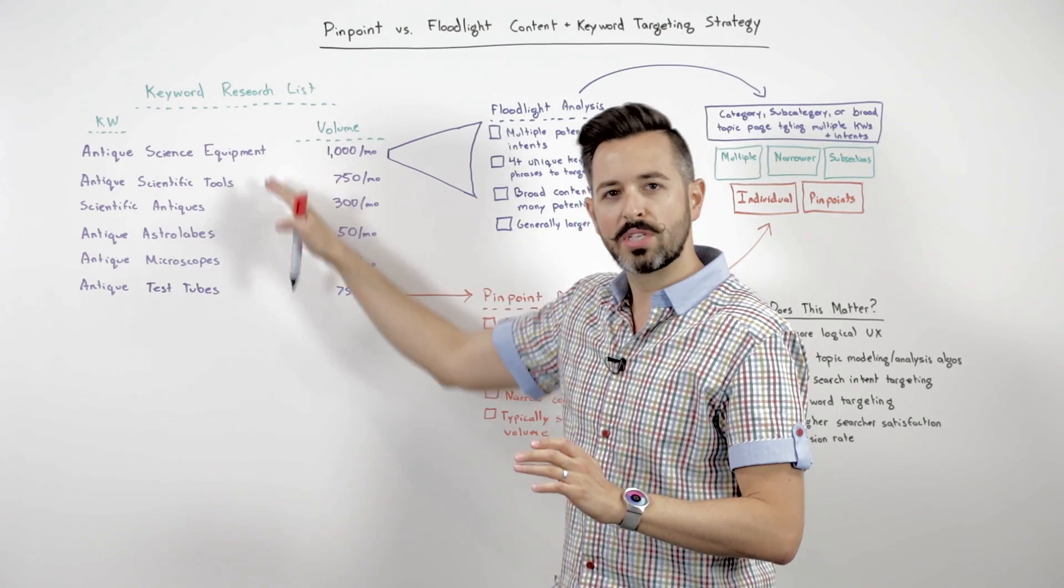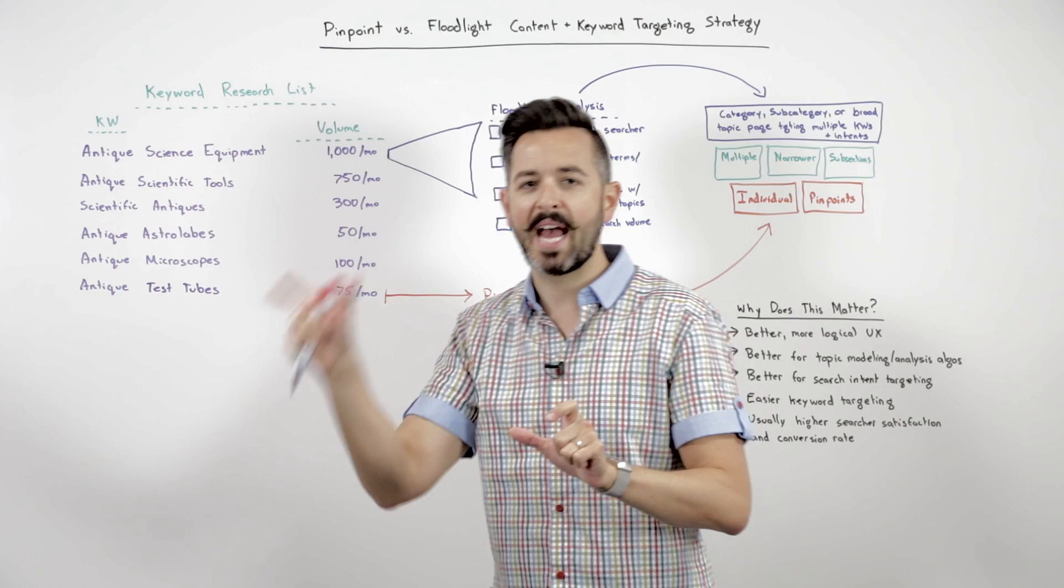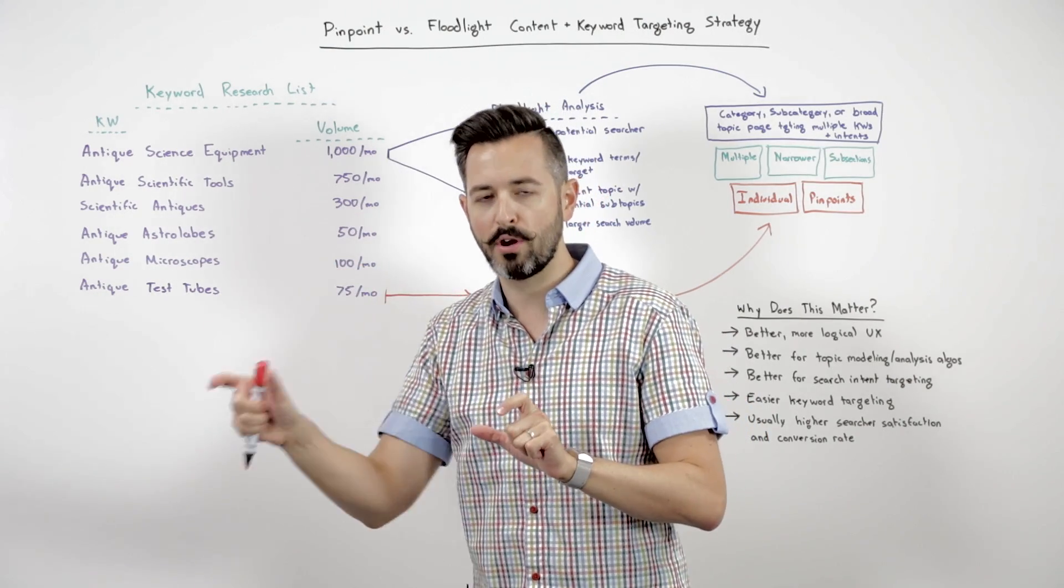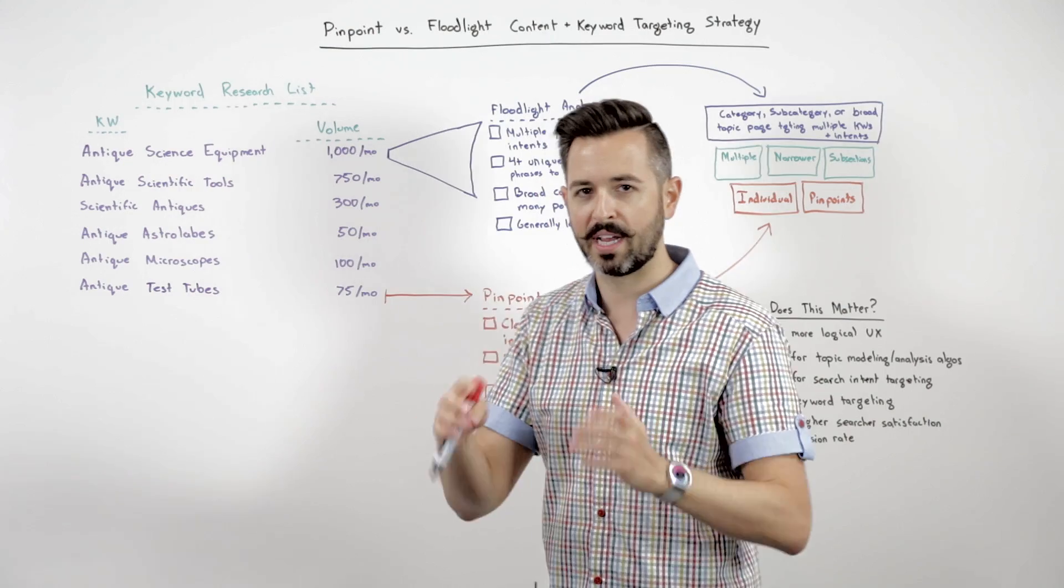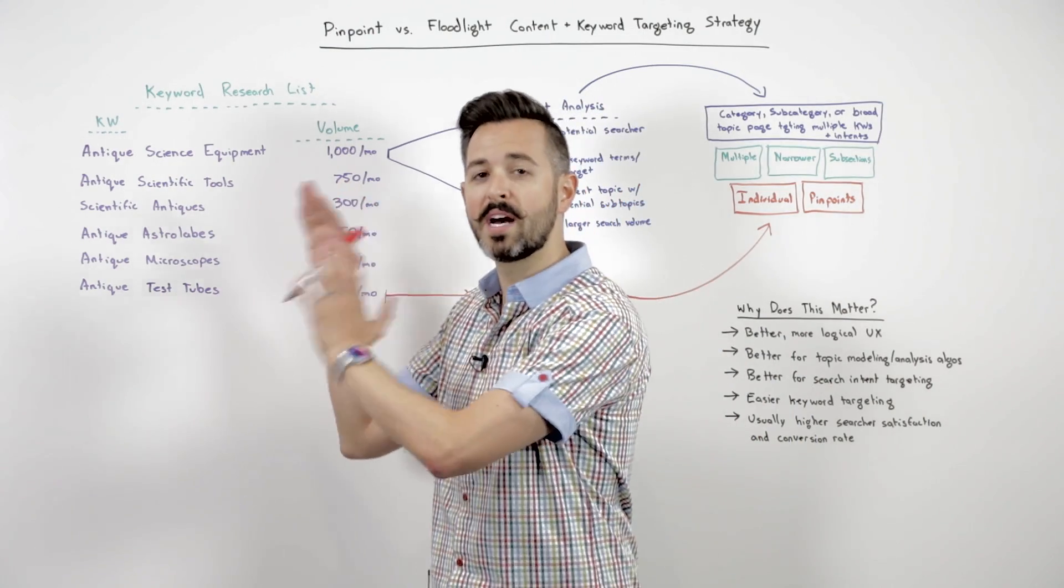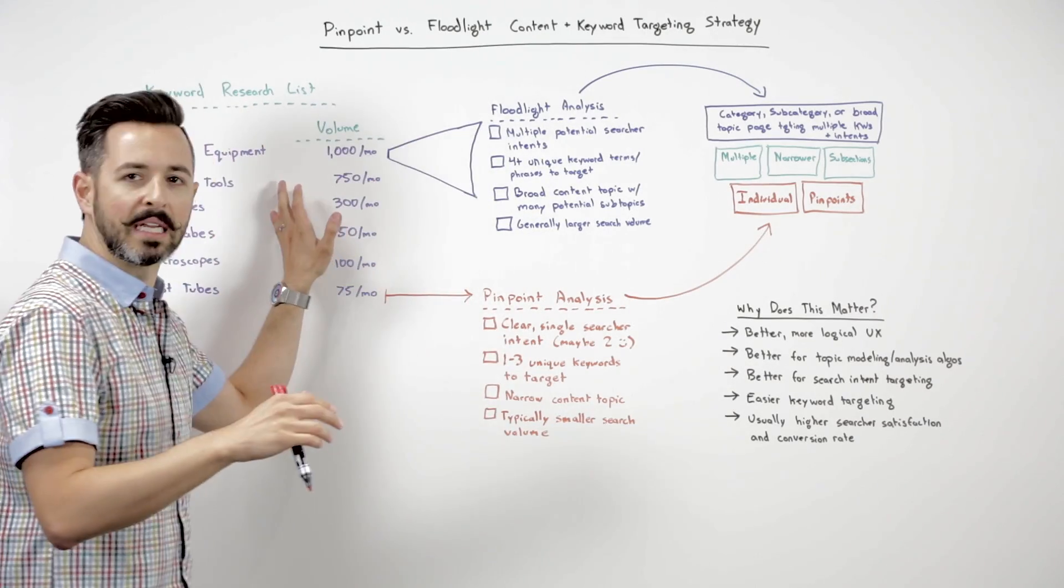You might choose some of these different terms. Now they're going to have different kinds of tactics and a different strategic approach depending on the breadth and depth of the topic that you're targeting, and that's going to determine what types of content you want to create and where you place it in your information architecture. I'll show you what I mean.